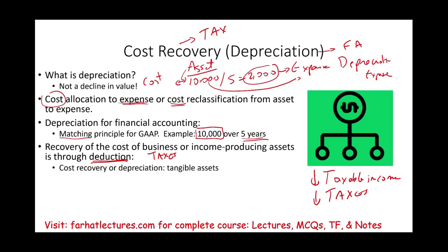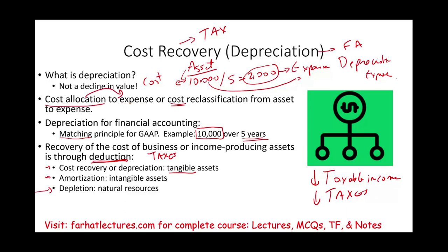Depreciation or cost recovery is the term we use for tangible assets — assets we can see and touch, like computers, cars, furniture, and office buildings. Then we have amortization, the same concept applied to intangible assets like patents and copyrights. We also have depletion, used for natural resources. All three terms — depreciation, amortization, and depletion — are basically the same: a form of cost allocation or reclassification from asset to expense.